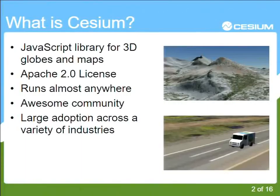For those of you who might not be familiar with Cesium, it's a JavaScript library for 3D globes and maps. You can do 2D in what we call Columbus View as well. It's an Apache 2.0 license — a very permissive license. It's written completely in HTML standards, largely WebGL, so it runs anywhere, just like any other web page, on your phone or on a tablet.